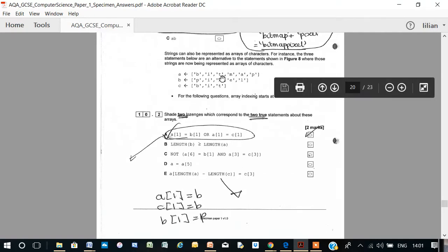A3 is T. And C3 is T. Remember, index 1, index 2, index 3. Index 1, index 2, index 3. It's 4, it's 5, it's 6. So, A3 is T, C3 is T. So, therefore, E is true.